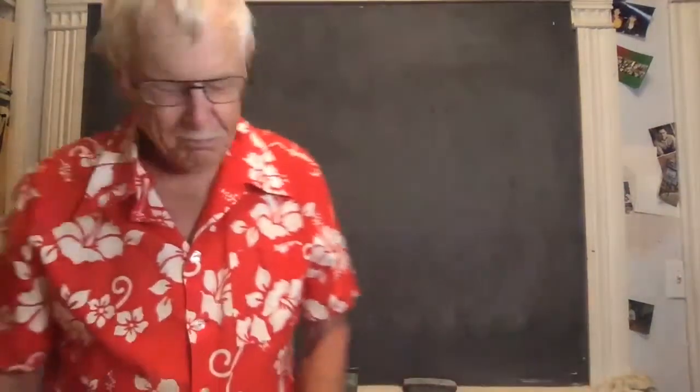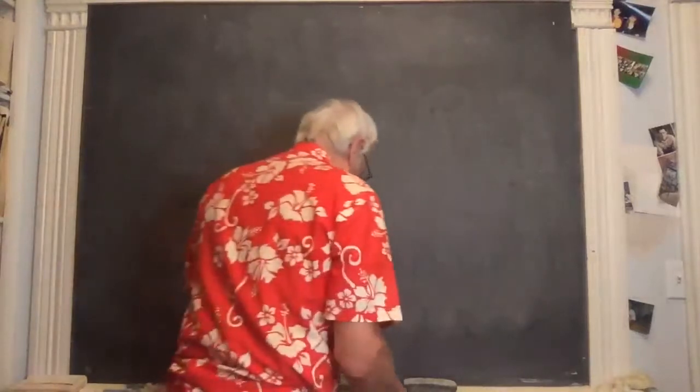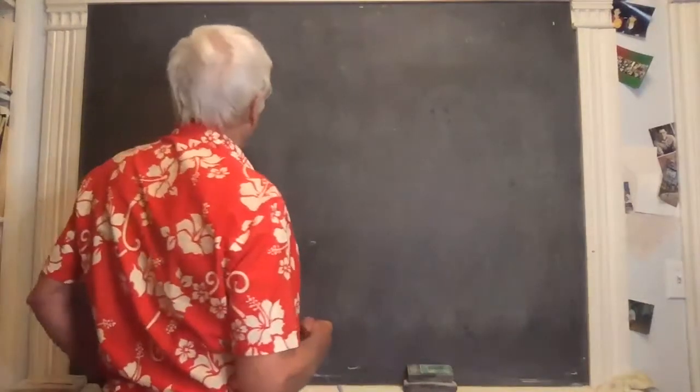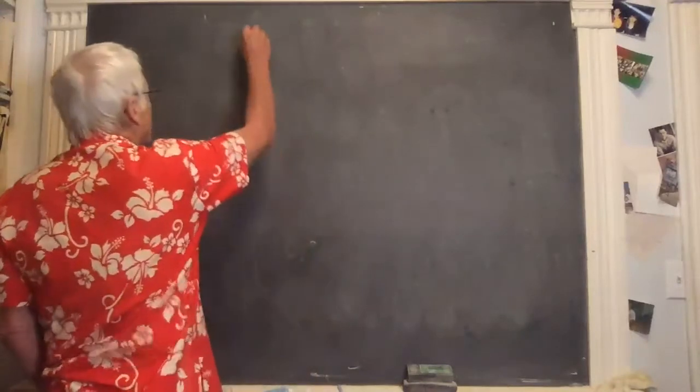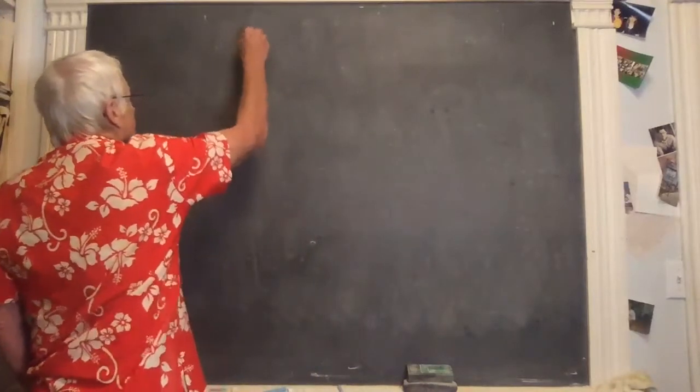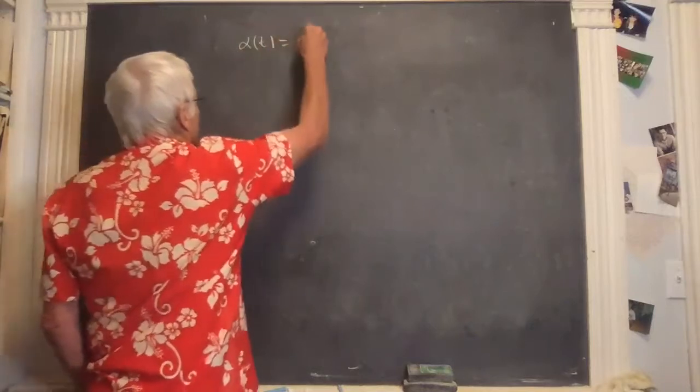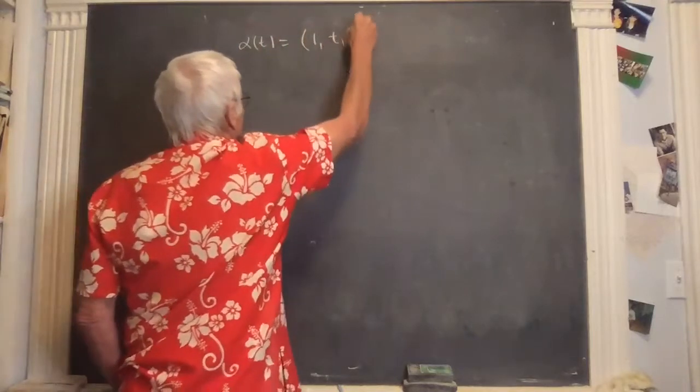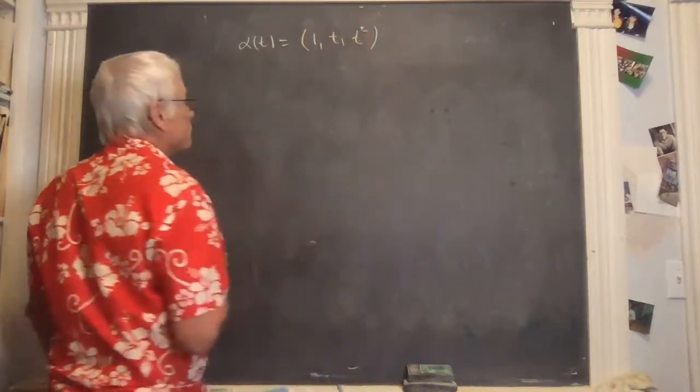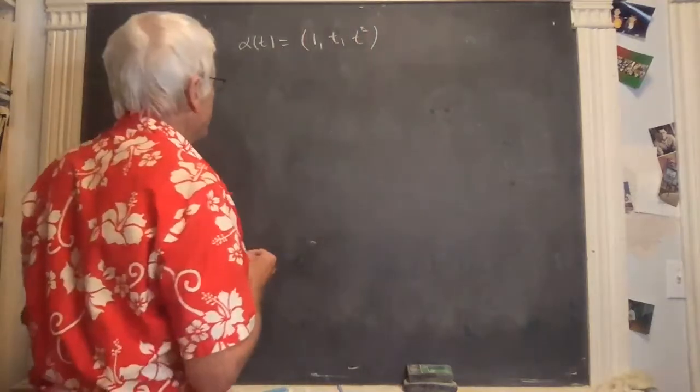All right. So we're going to be looking at the geometry of these space curves for a while. So let's take a space curve we're kind of familiar with: alpha of t equals (1, t, t²).